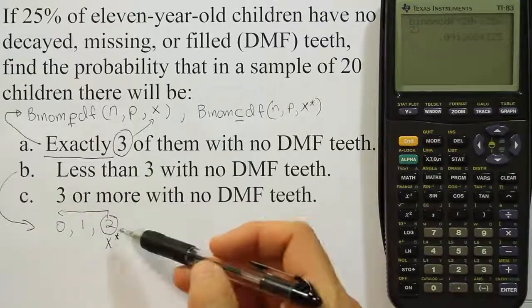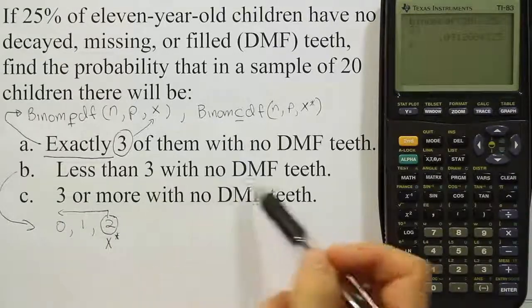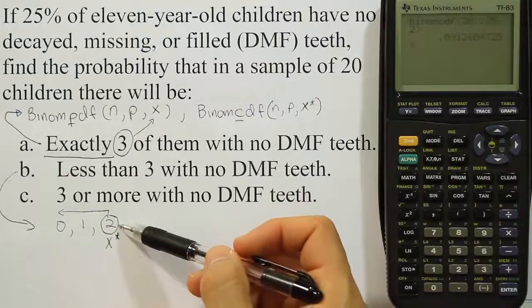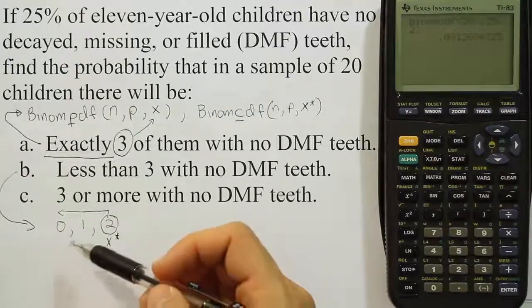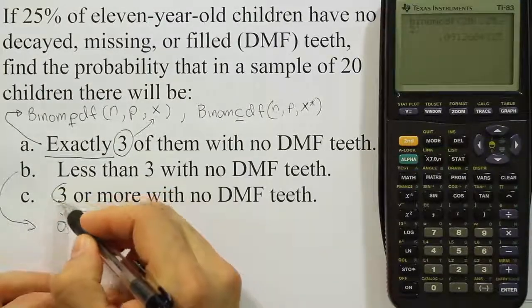So how do we do that? Well remember, less than 3 means either 2, 1, or no children with no DMF teeth. And we gave the calculator 2, so it would calculate from 2 to 0 and add it all together. Let's do the next one, part C. C says 3 or more. So if you look at this one, it's going the wrong way. Our calculator doesn't go up, it adds down. So 3 or more is a problem.